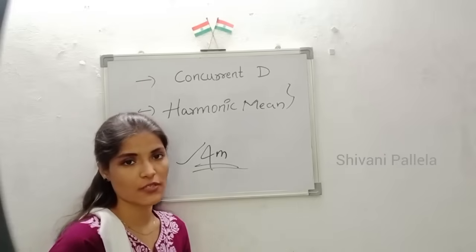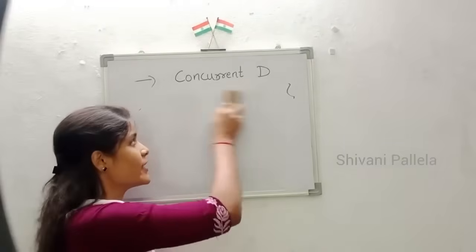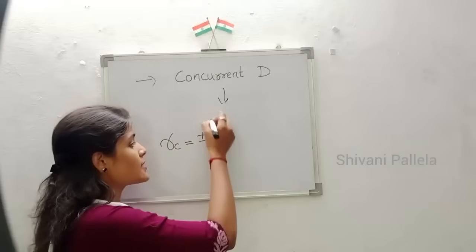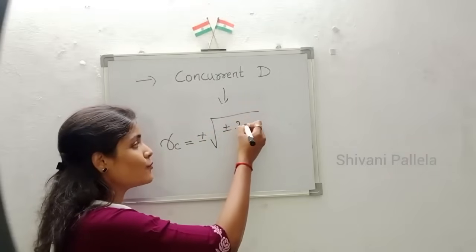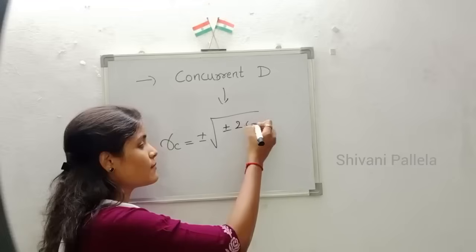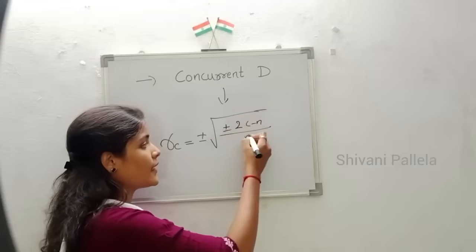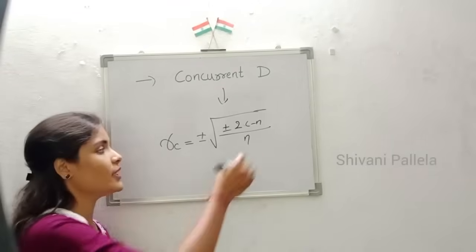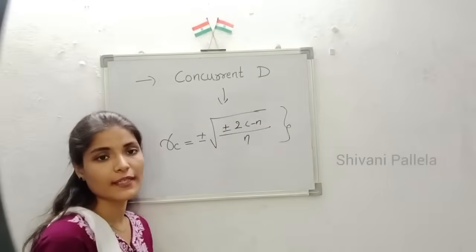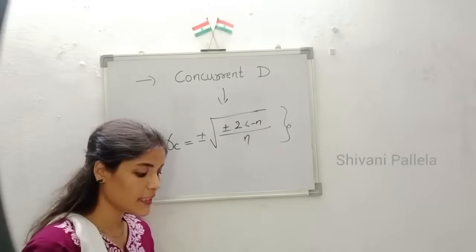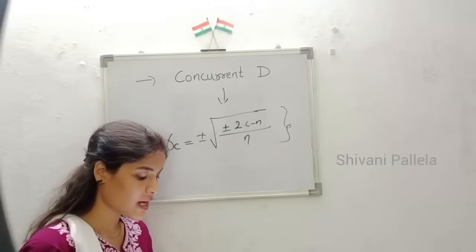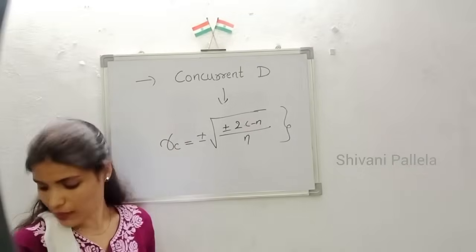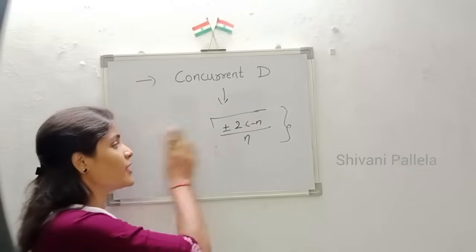Now we will discuss about concurrent deviation. The formula is: RC is equal to plus or minus under root of plus or minus (2C minus N) by N. This is the formula for concurrent deviation. They will give the question and we need to substitute into this formula. Just note down this formula for concurrent deviation.